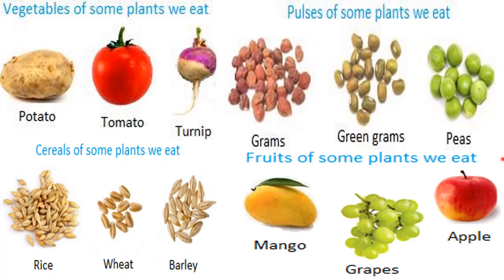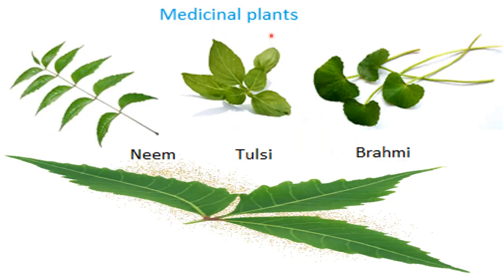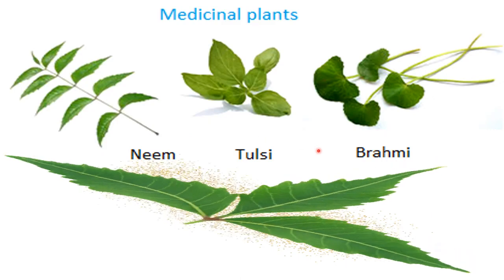We also get wood from trees, which are big plants, and we make furniture from wood. So wood is also a main use of plants. There are some medicinal plants also, such as neem, tulsi, and ramri, which are used for medicinal purposes.